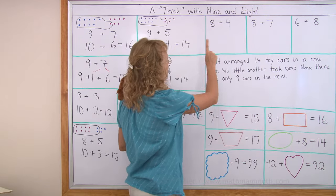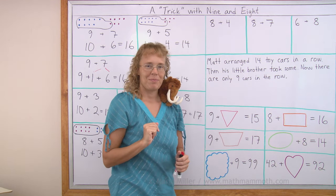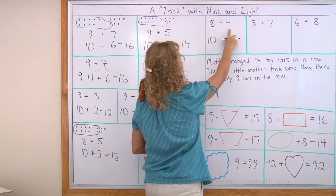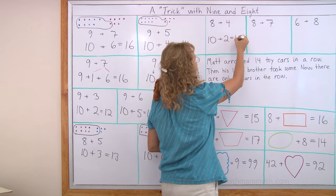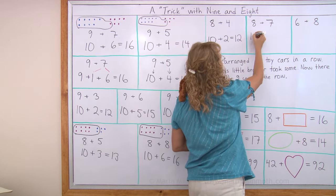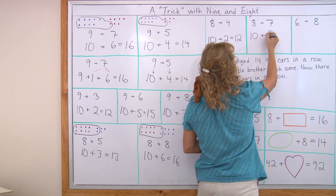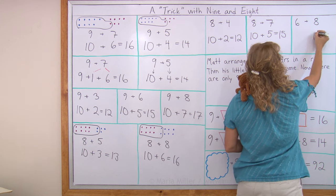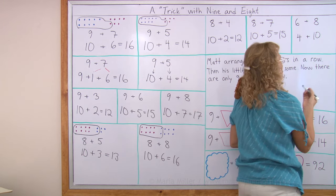Let's practice though. 8 plus 4. 8 plus 7. And 6 plus 8. Try those on your own. 8 becomes 10. This 4 becomes 2 less than it was. So it only has 2 left. 10 plus 2. 12. This 8 becomes 10. And 7 becomes 2 less than what it was. 5. 10 plus 5. 15. Over here the 8 is here. So 8 becomes 10. And 6 becomes 2 less. Or 4. 4 plus 10. 10 plus 4. 14.